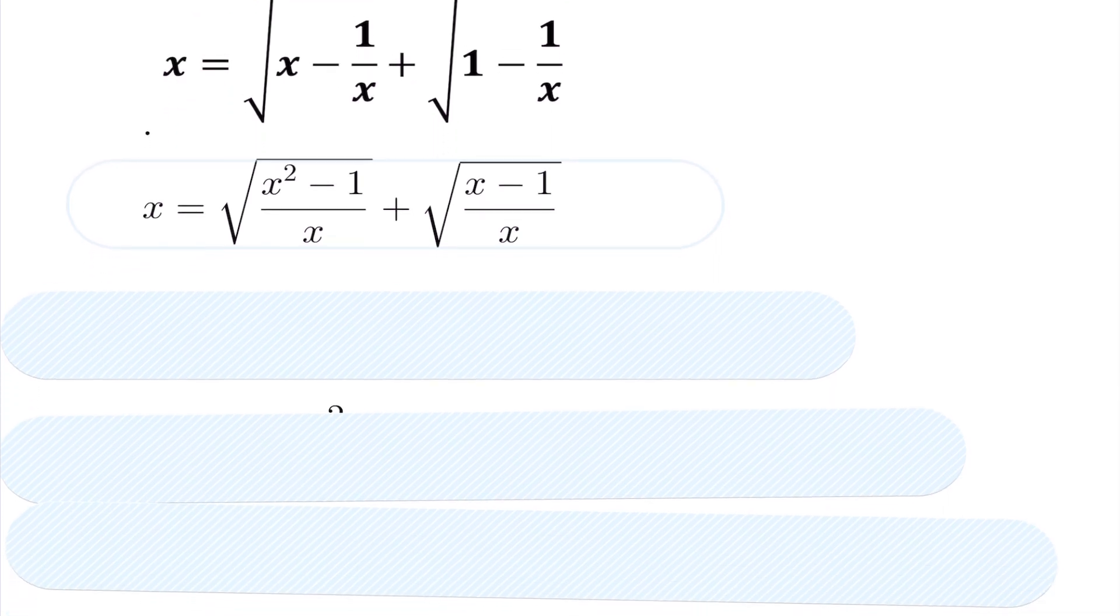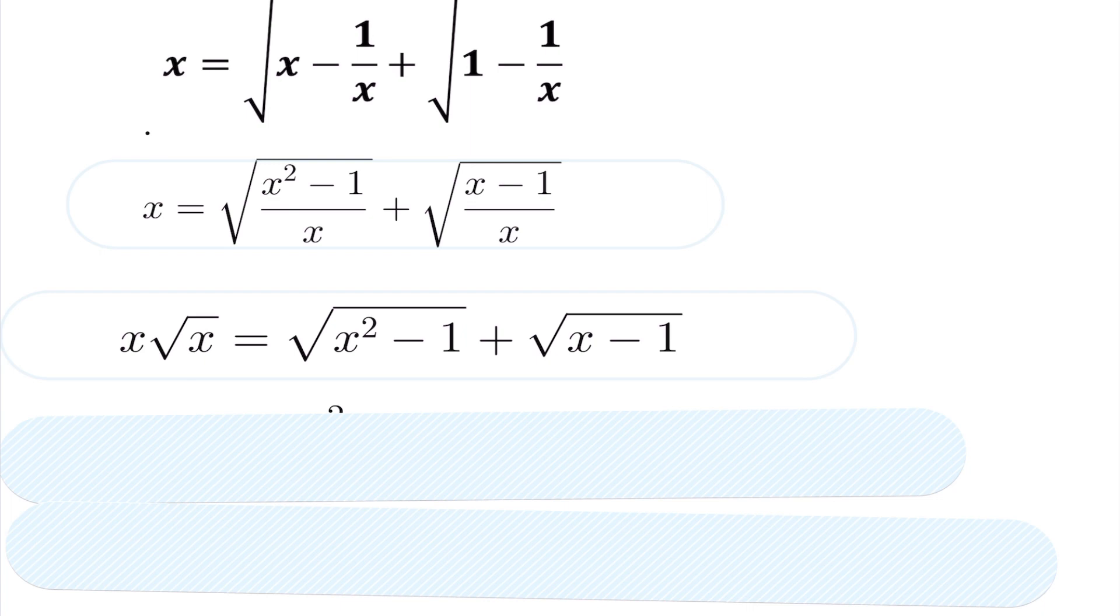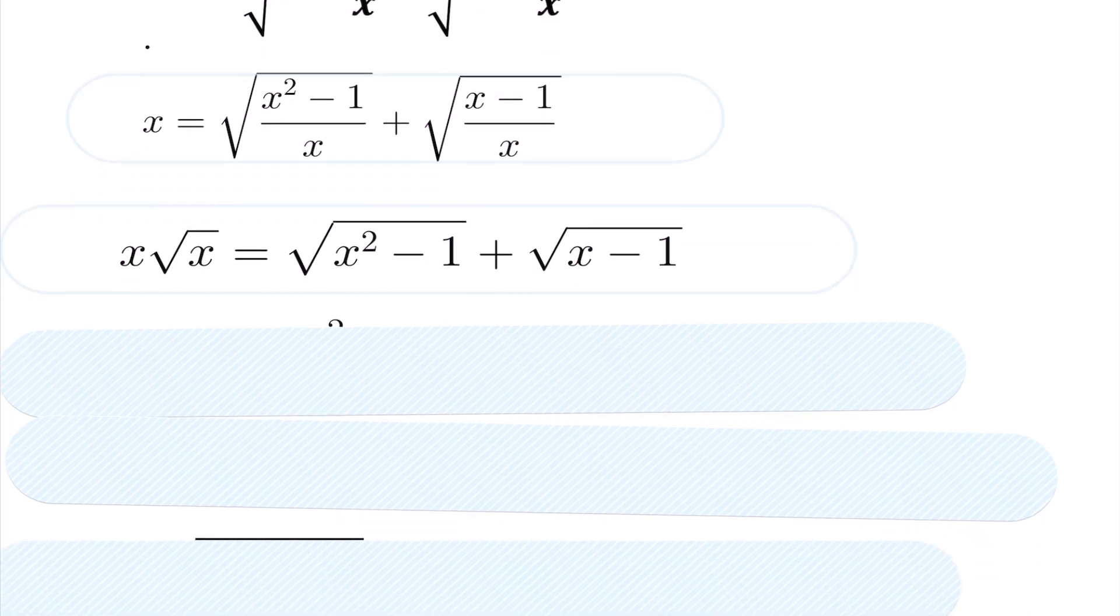Now I'm going to make the observation that the bottoms both are root of x. So I can multiply across by root of x to clean up the denominators, getting everything to one spot in our equation. So now we have x root x equals the square root of x squared minus 1 plus the square root of x minus 1.